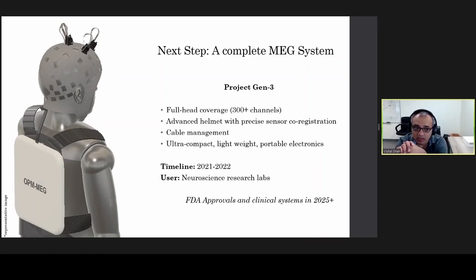We hope or we expect that the complete MEG system will have around 300 channels, which is roughly the same as the state-of-the-art squid-based MEG system in channel count. We expect the system will be portable and will have a form factor much like an EEG system. There will be a fancy helmet, not like the one shown here, but one that has precise sensor coregistration, ability to give you precise sensor coregistration data, and has advanced features and cable management so that there aren't hundreds of cables poking out of the helmet.